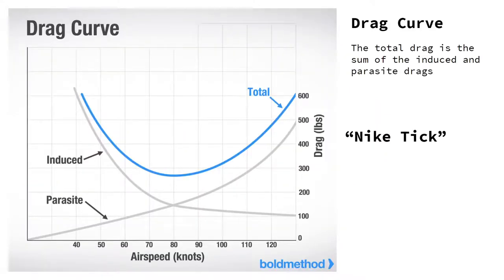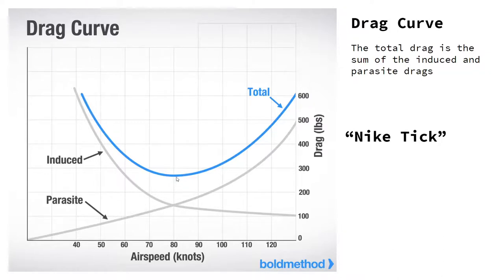So let's look at how we get these values. First off, the drag curve — call it the Nike tick, because it looks like a Nike tick. So let's take the drag, or the amount of thrust we need to maintain certain speeds, because the thrust would be equal to the drag. So this could be the thrust curve or the drag curve — it doesn't matter. When we're talking about drag, if we want to maintain 80 knots we need this amount of thrust; if we want to maintain 90 knots, this amount of thrust, and so forth, because we're overcoming drag — which is why this is the drag curve.